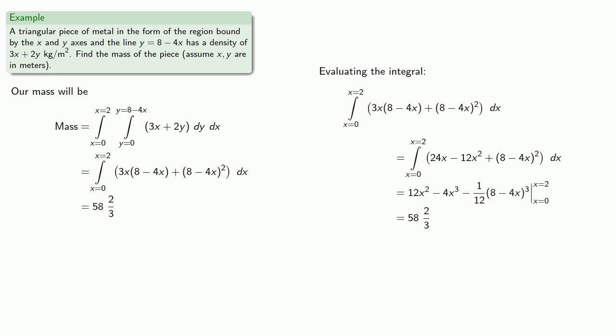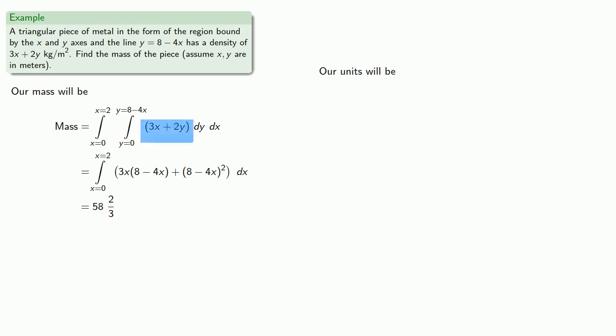But again, we should always verify that our units are what we need them to be. If we look at our integrand, 3x plus 2y has units of kilograms per square meter. dy and dx are both measured in meters, and so our units of the integral will be kilograms. Since we're looking for mass, and a kilogram is a unit of mass, our answer is probably correct.